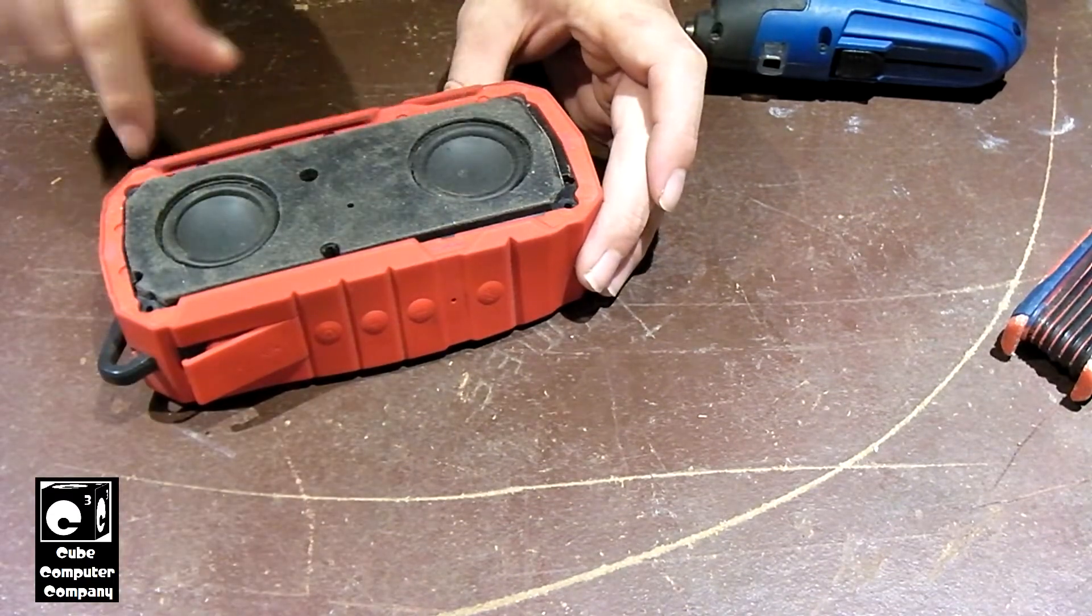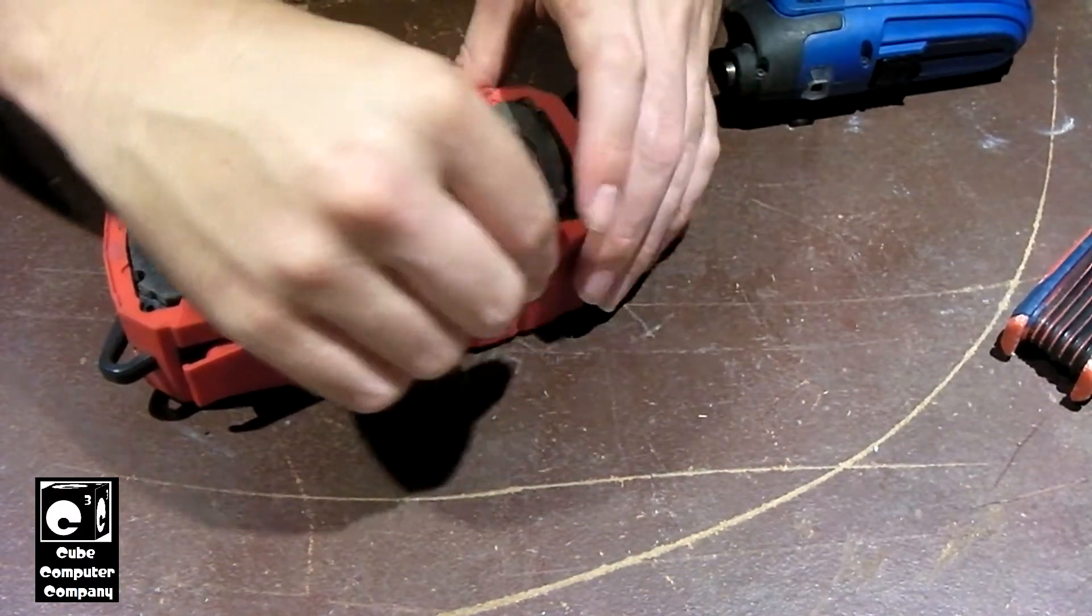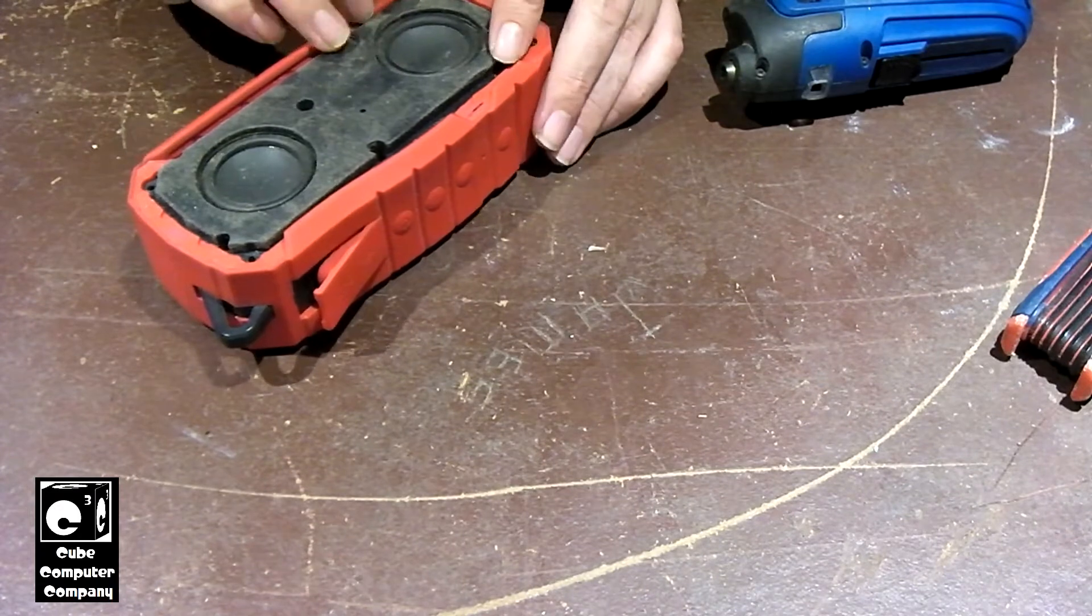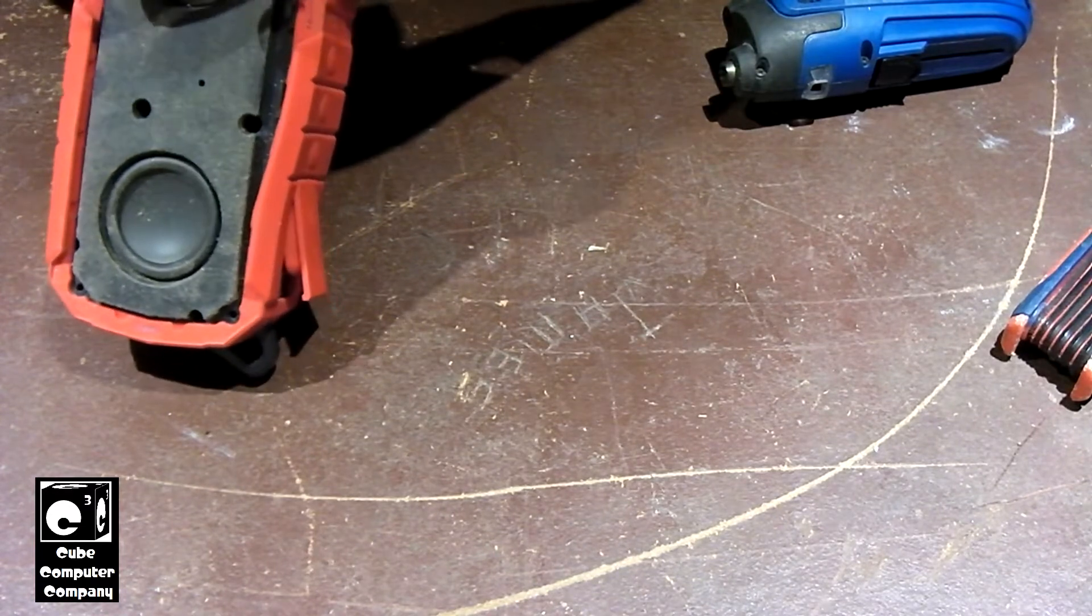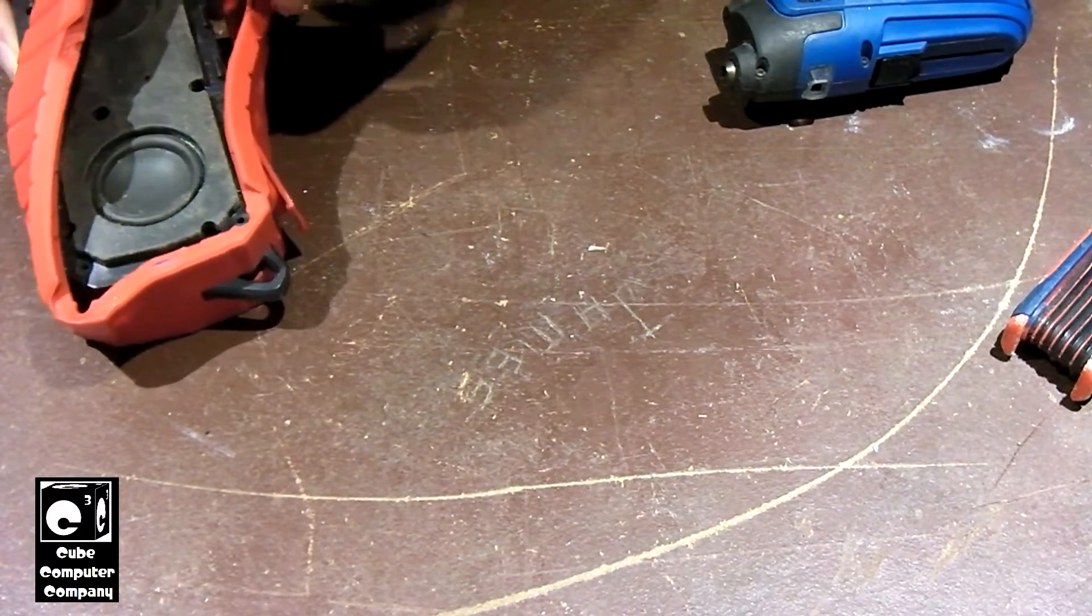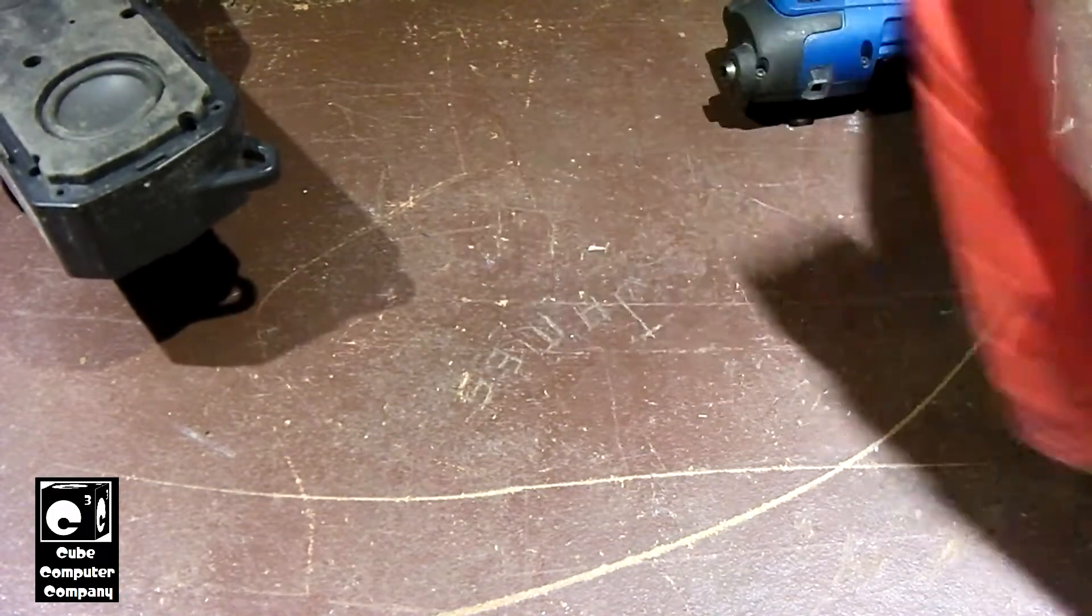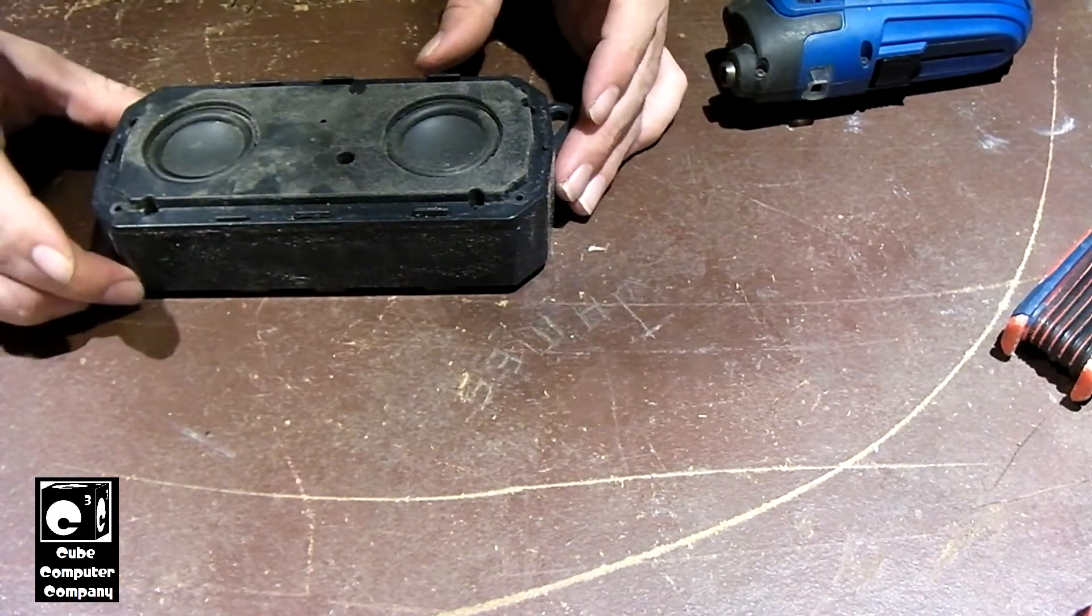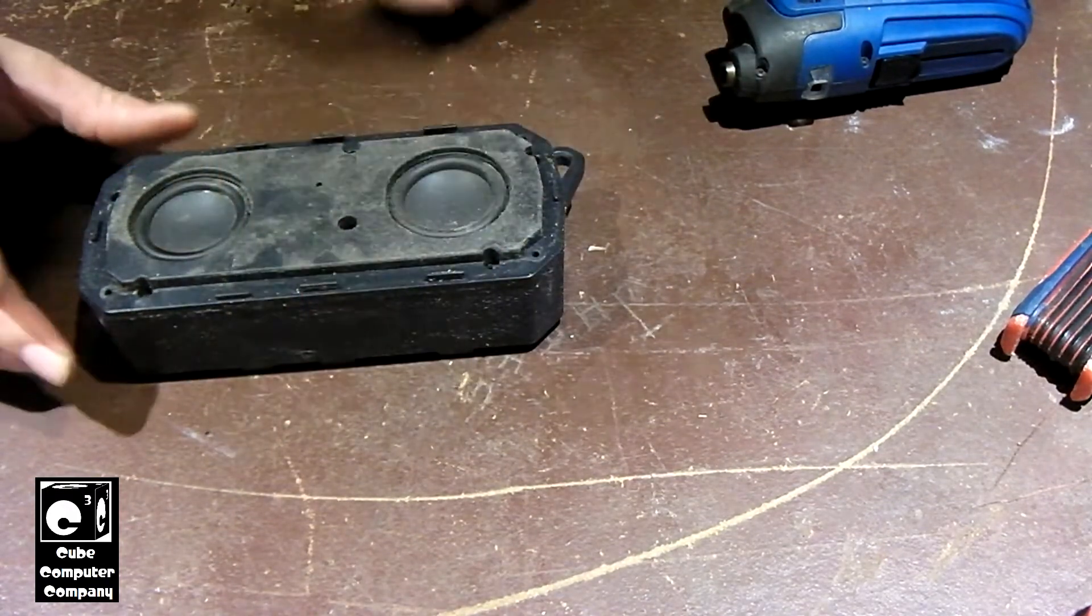And now we have additional screws to get into the speaker. First we're going to get this red cover off and out of the way. It's safe to say this thing has been carried around quite a bit and used. My mom is a mail carrier and the mail trucks do not have a built-in radio. You provide your own basically. Alright, so we got one, two, three, four, five, six screws to check out.